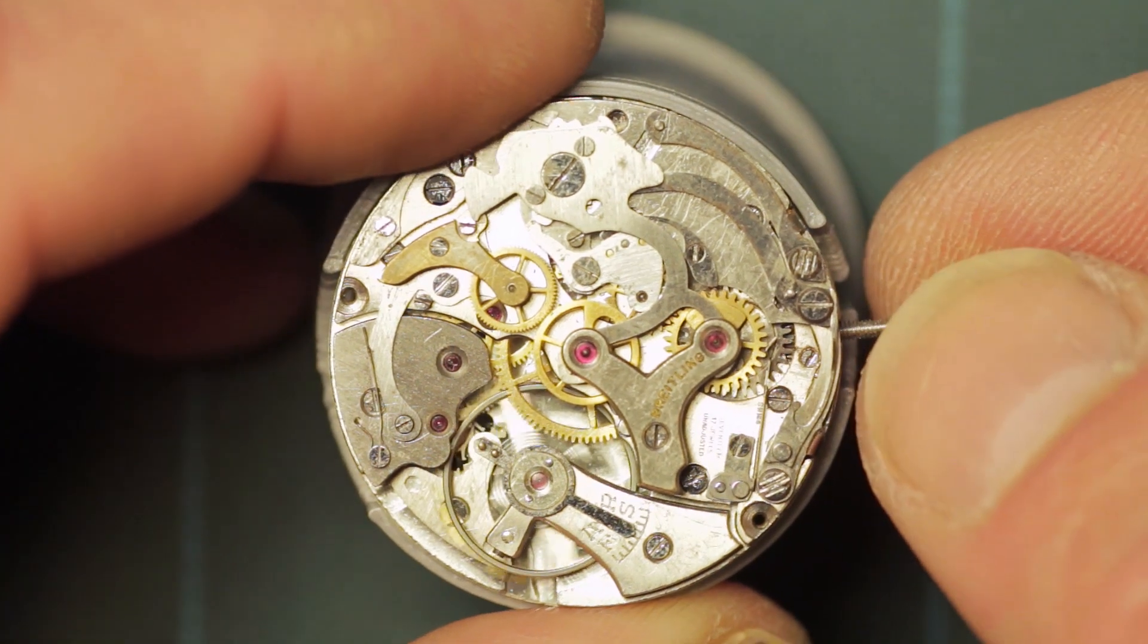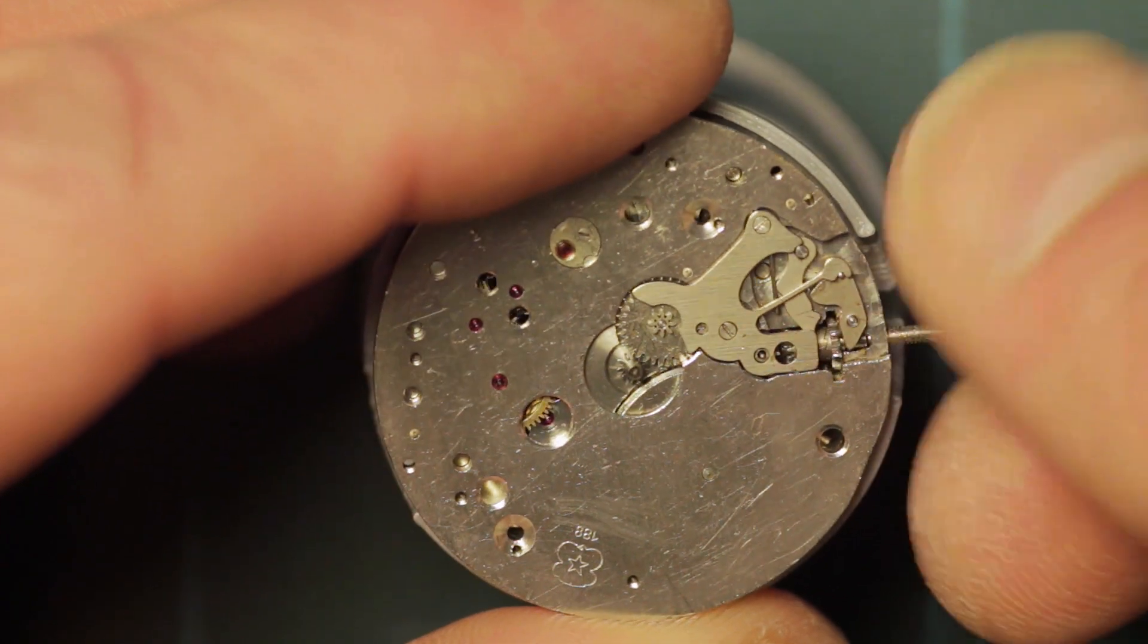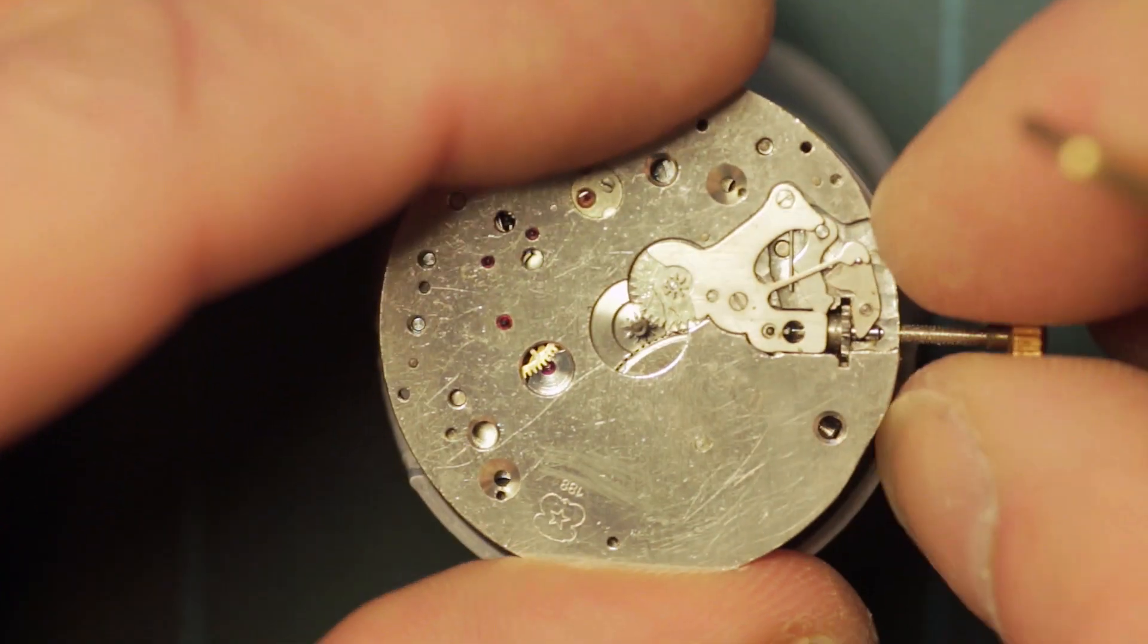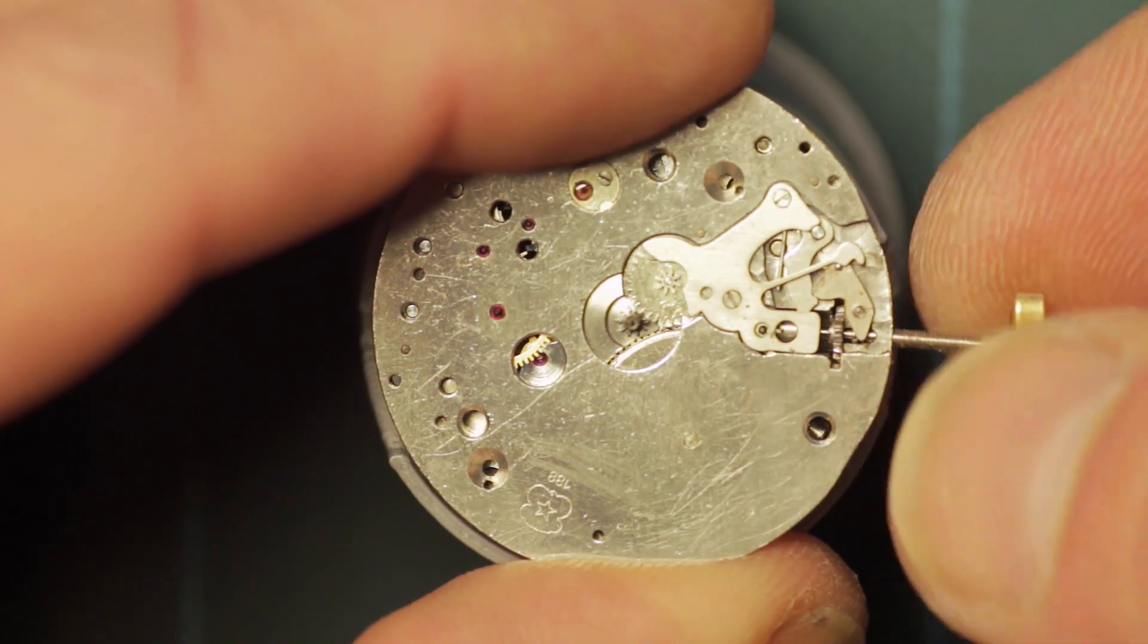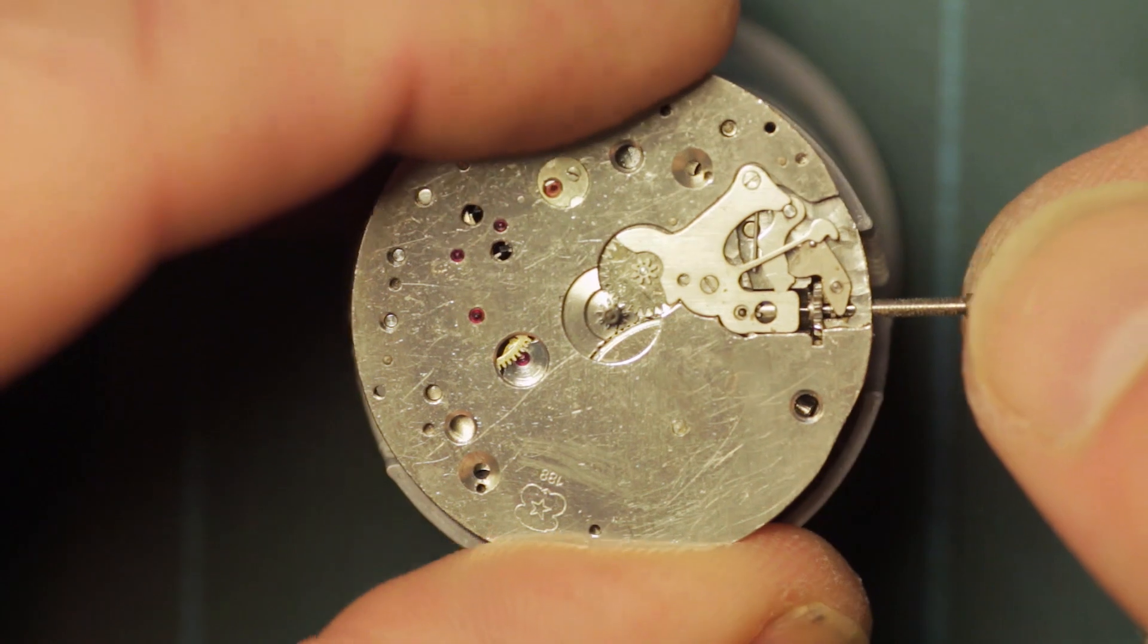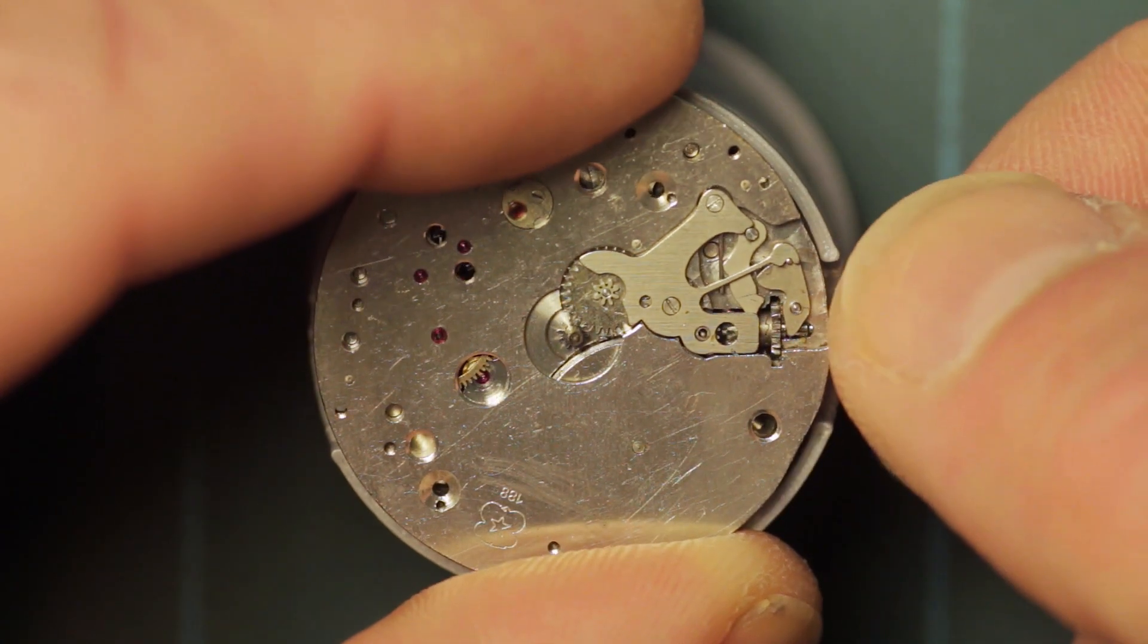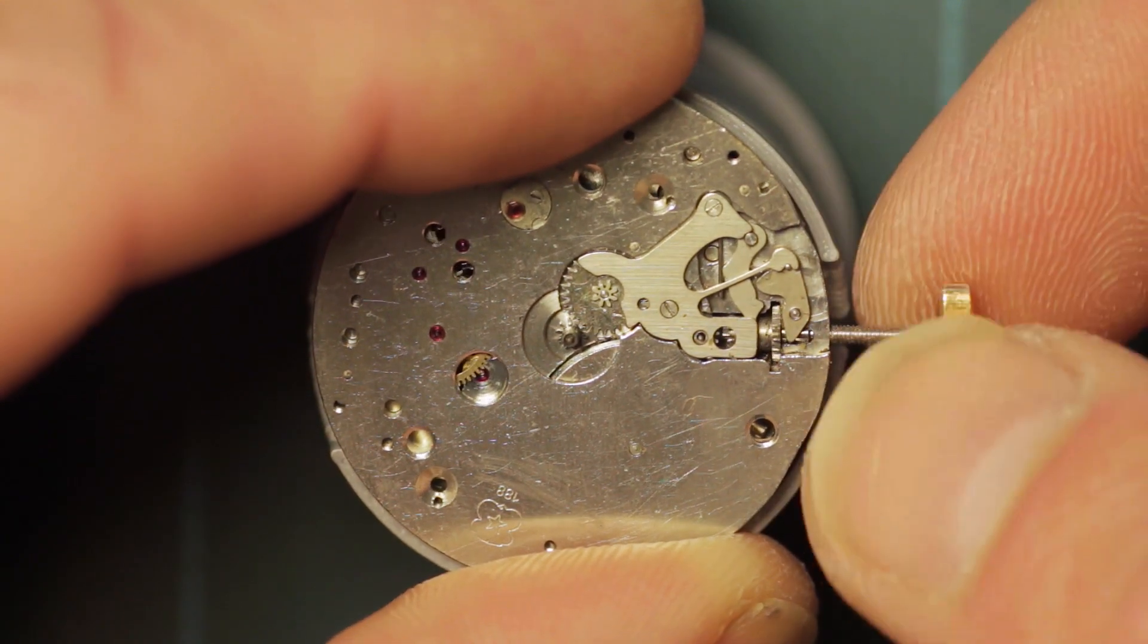Having reseated the setting lever and got the stem to sit in there properly, you pull it out to the hand setting position and all is well there. You can see it turning the minute wheel and the cannon pinion. The hour wheel is already removed because that's just a slip-on fit. But when you push it into the winding position, it's winding partially and then catching and slipping.